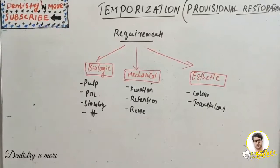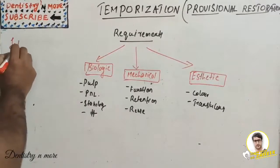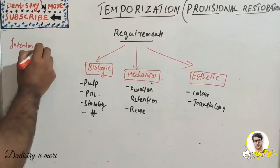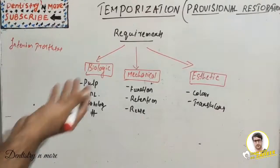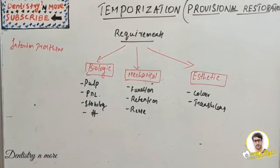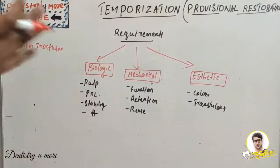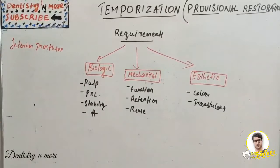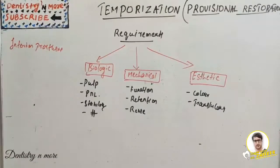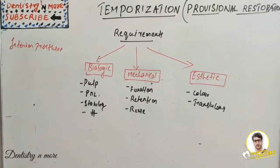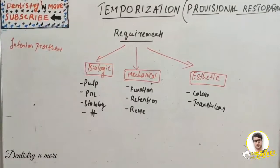Temporization has a few other names — it can be called an interim prosthesis, as it is for a very short period, or a provisional prosthesis. It is given until the permanent restoration is done, to protect the prepared tooth and keep the patient comfortable. Successful treatment with a provisional restoration allows the dentist to gain the patient's confidence, which is a very influential factor for the success of the final restoration.